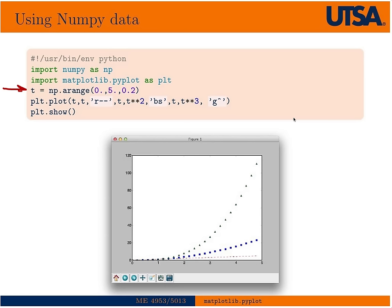And then we're going to produce three plots. Again, you'll notice this is basically exactly as you would do it in MATLAB. The first plot, we're going to plot T against T, and that's going to be a red dashed line. Then we're going to plot T versus T squared, blue squares. Then we're going to plot T and T cubed, green triangles. And then we just issue the show command, and we get this plot here.